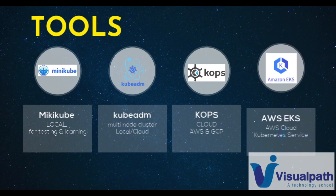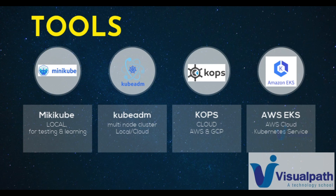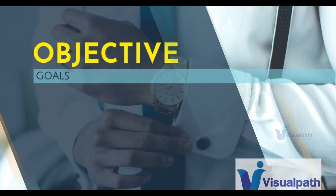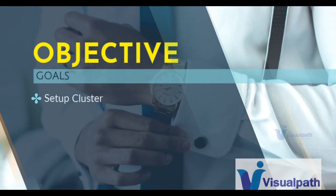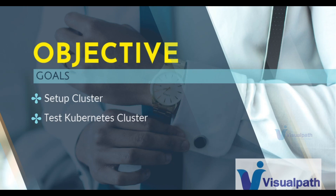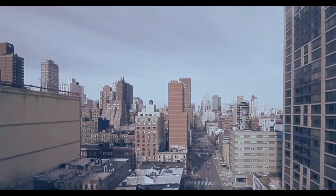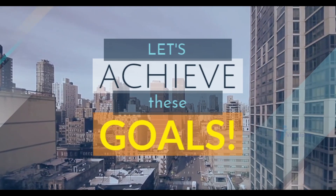AWS has its own service, EKS. We're going to see how we can set up a Kubernetes cluster on EKS. EKS is a service from AWS — you just need to run some simple commands and AWS will provide you a production grade Kubernetes cluster. In my view, it's the easiest way to have a very efficient Kubernetes cluster powered by AWS. Our objectives are simple: set up a cluster and test the Kubernetes cluster locally and on the cloud. Let's dig in and achieve our goals.